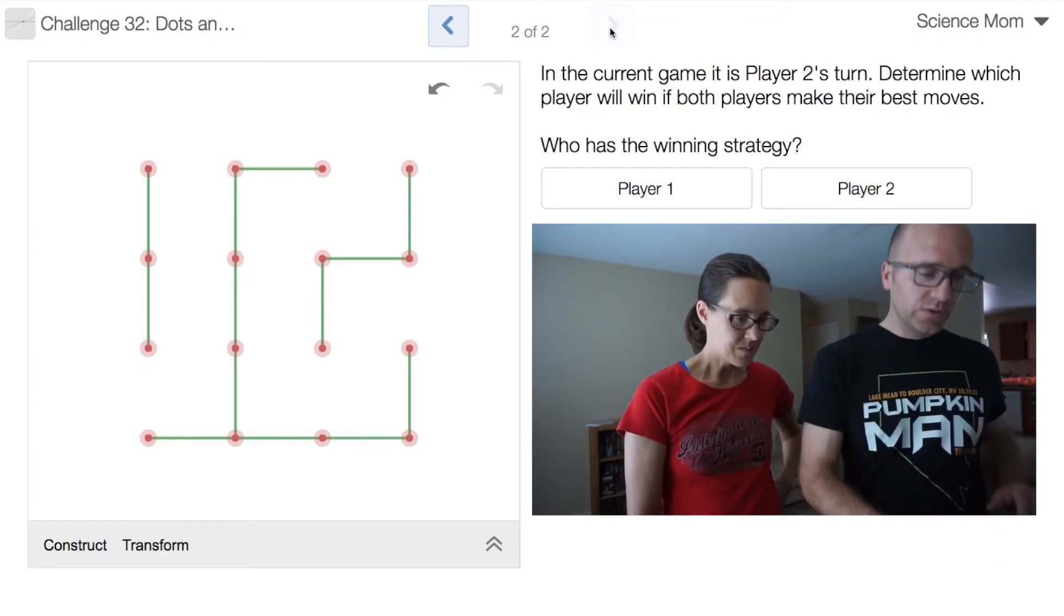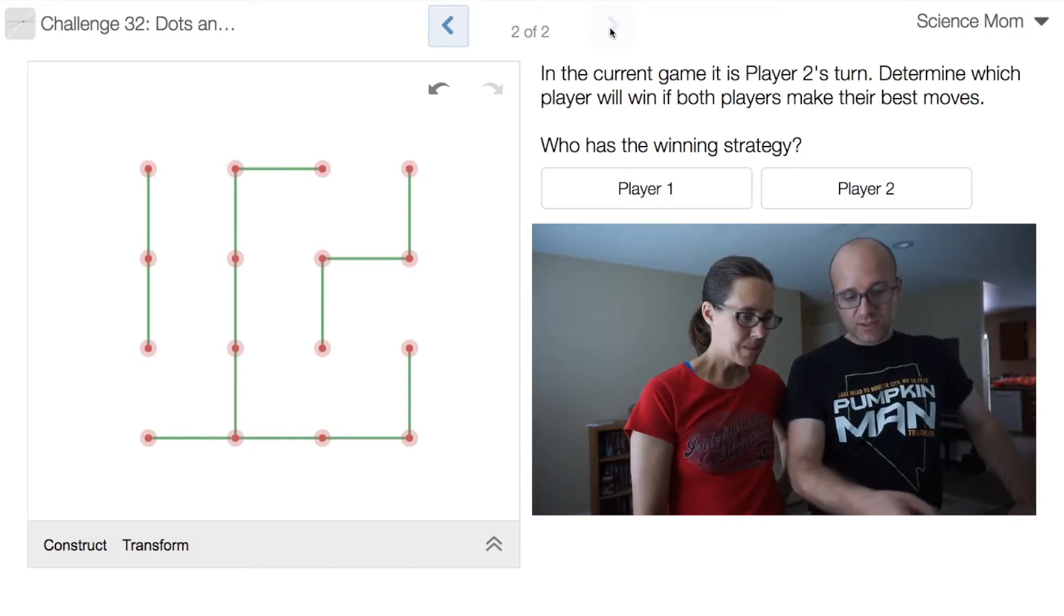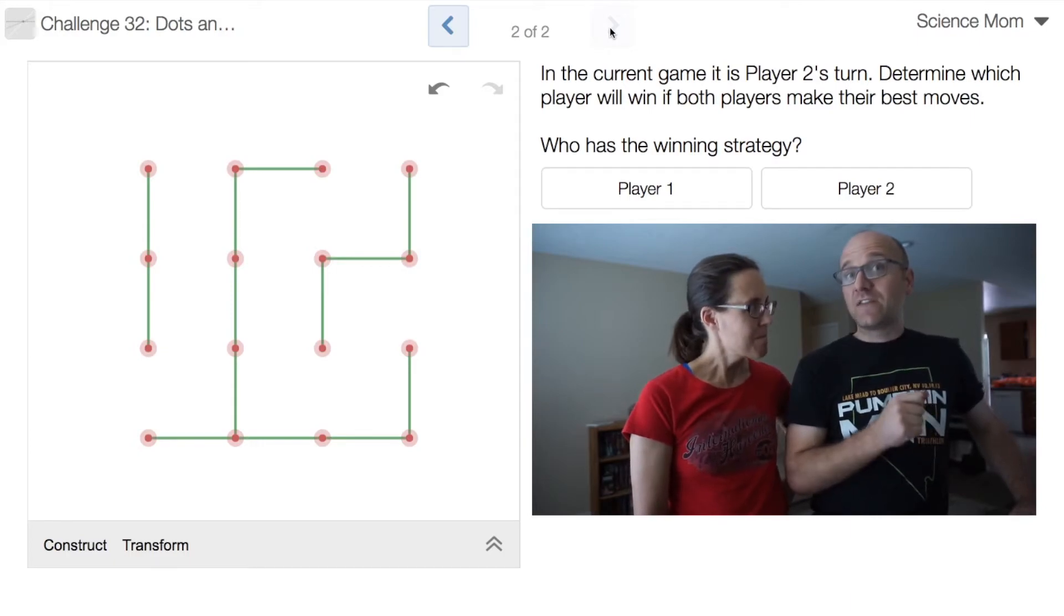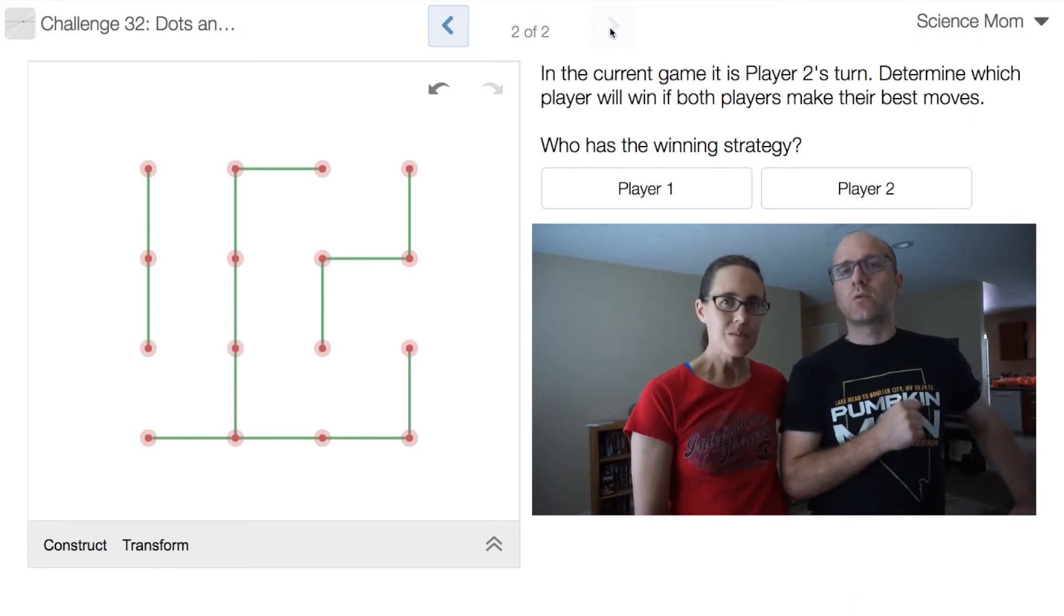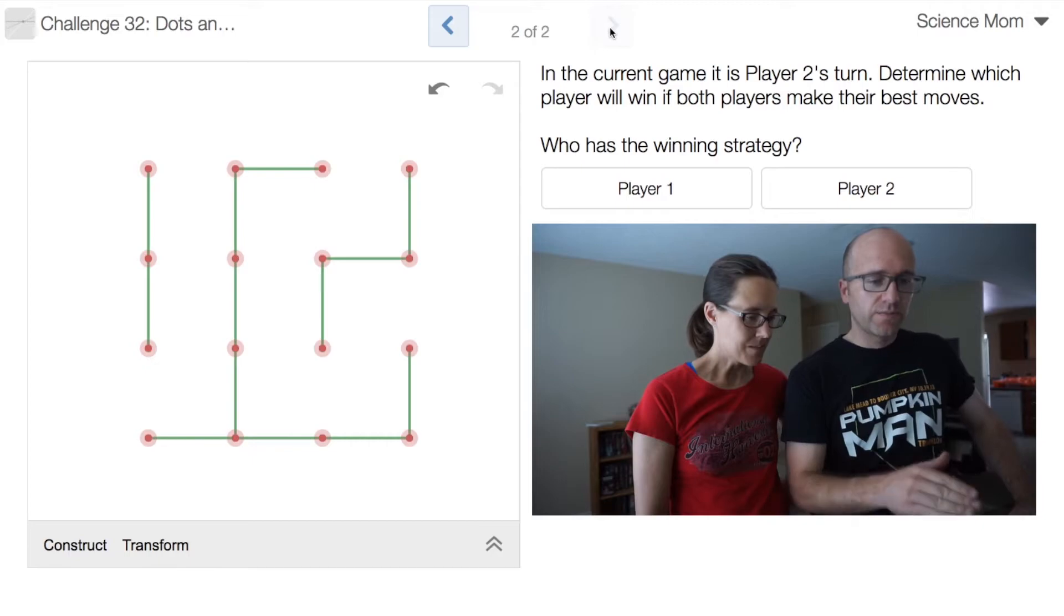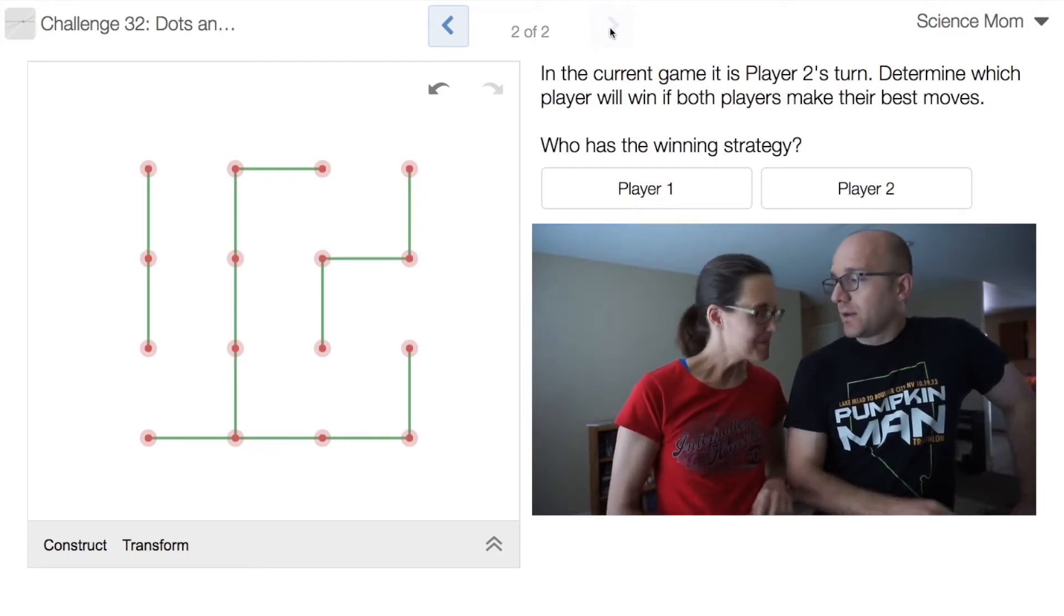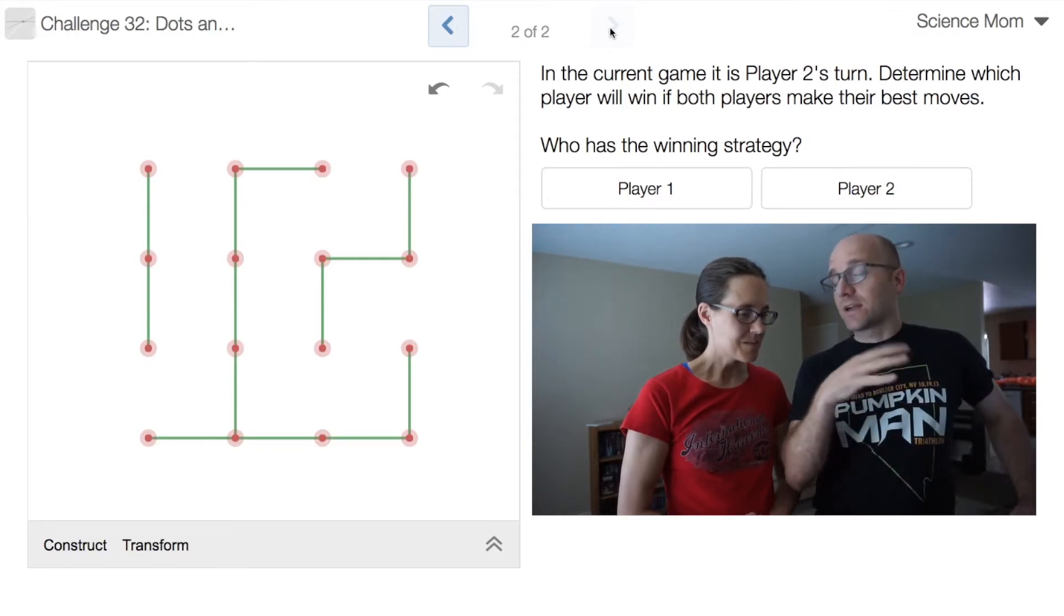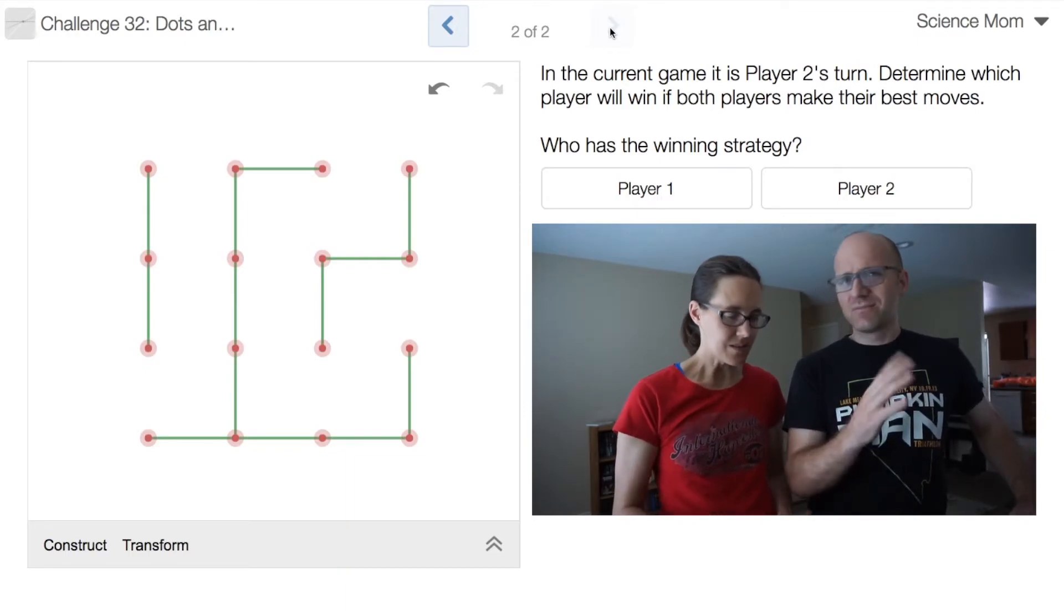And it's player two's turn right now. That's right. It's player two's turn, and what you'll notice is that it's a very full grid already. There aren't really any safe places to go where you're not going to enable the other person to get any boxes. I'm going to give you two minutes to complete this challenge, and you can't just name the player. You're going to have to actually explain what the strategy is.